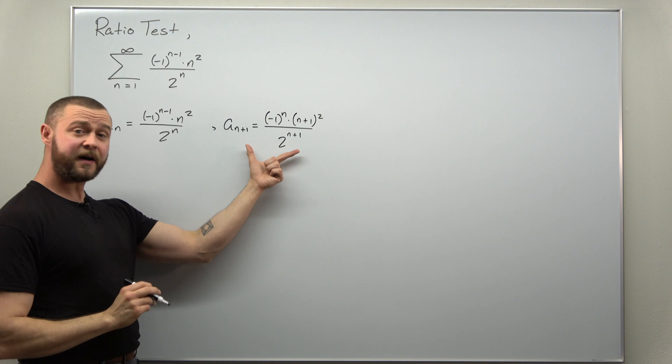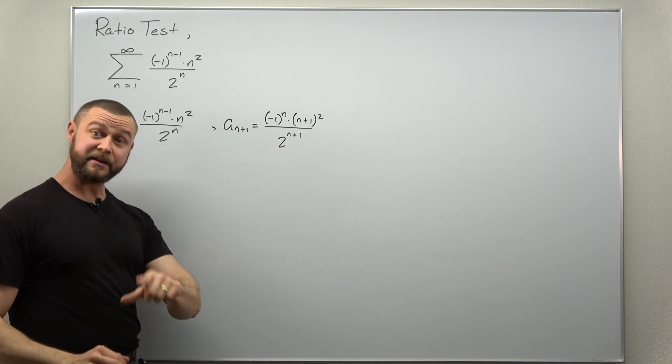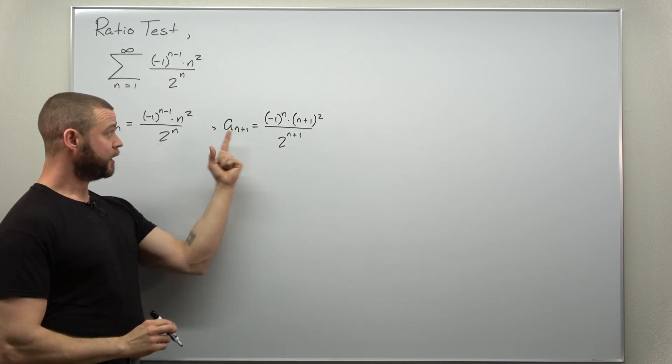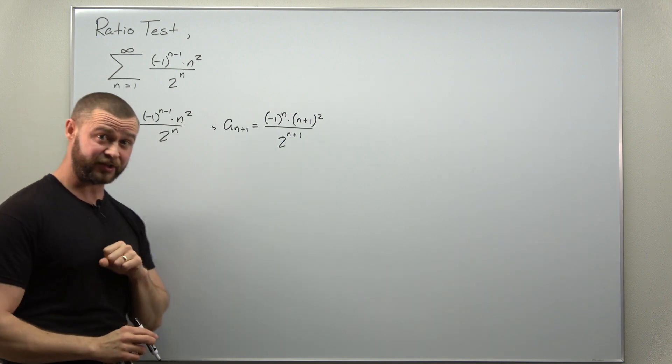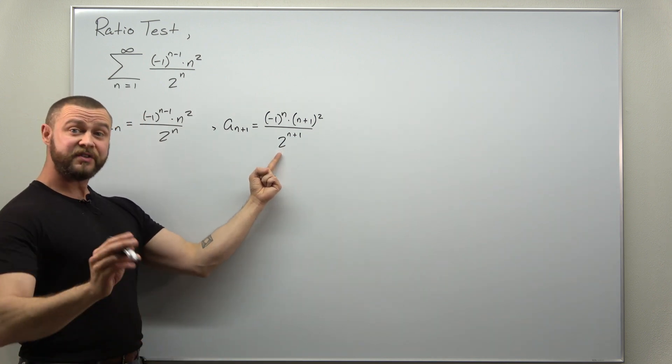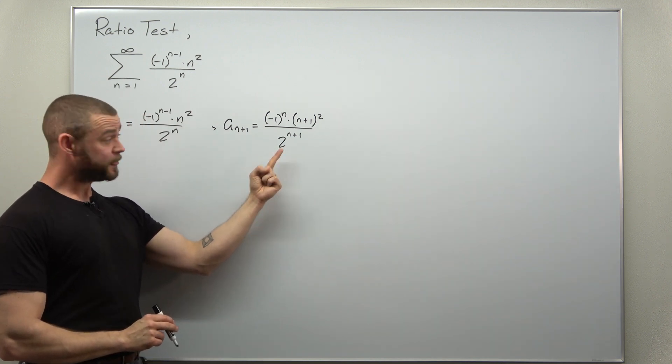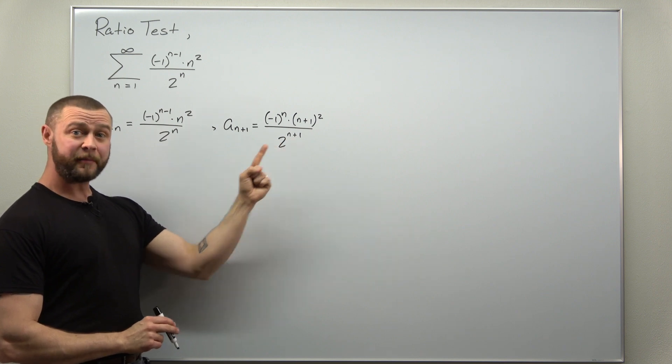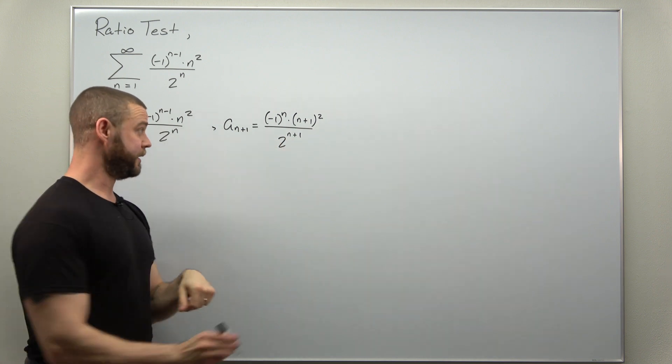Now, what I like to do is simplify this as much as I can before I turn this into the ratio of a_{n+1} divided by a_n. And what I can do is the simple exponent trick where I'm going to replace that denominator with two to the n times two to the one.